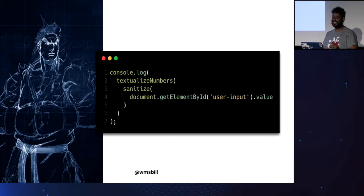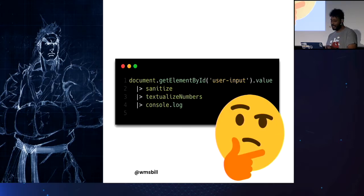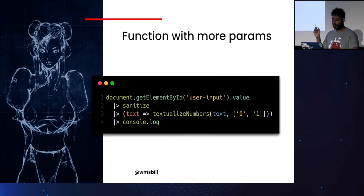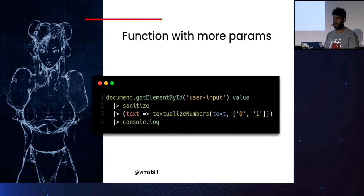But what if my chaining function needs to receive one extra parameter? The way we're using this assumes all functions receive just one parameter. Suppose that `textualizeNumbers` has a second parameter — a list of numbers to textualize — and the manager asks to textualize only zeros and ones. We could wrap that function with an arrow function, but in the minimal proposal we need to wrap the arrow function with parentheses, otherwise we get a syntax error.